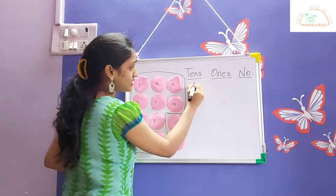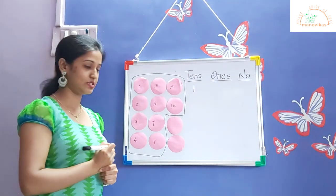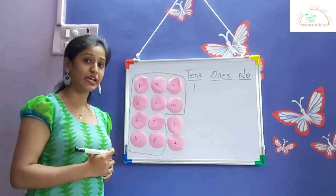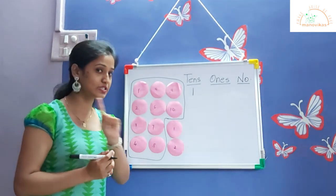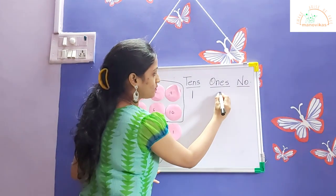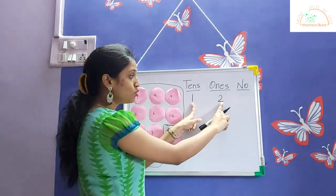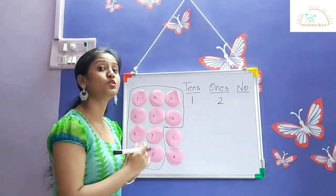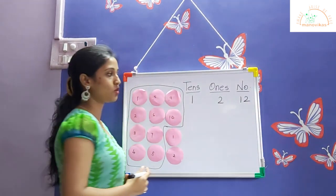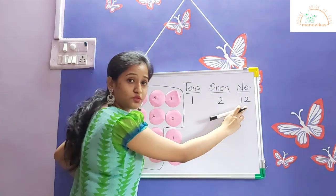We write one ten in the tens column. Now let us count the remaining circles: one and two. We have two circles which don't make one bundle, so we write it in the ones column. The number one and two combined makes twelve. One ten and two ones makes twelve.